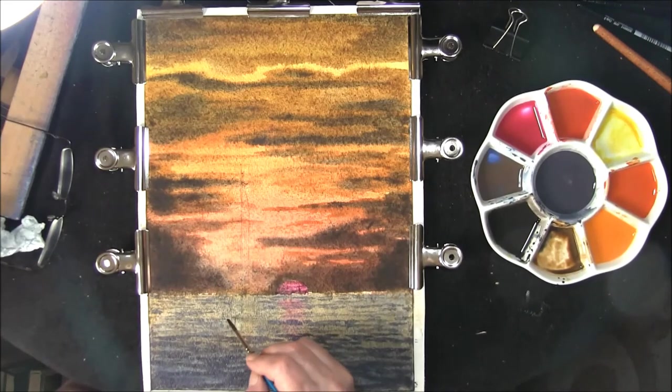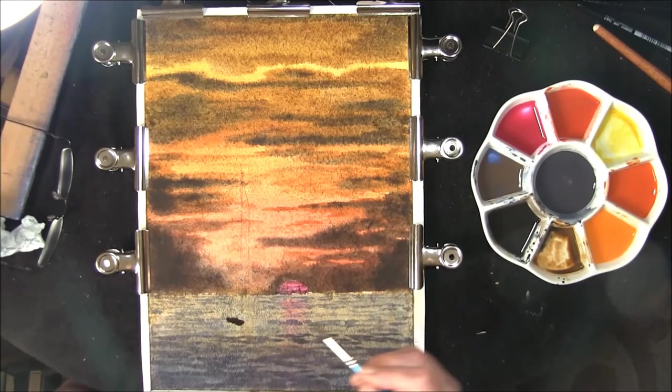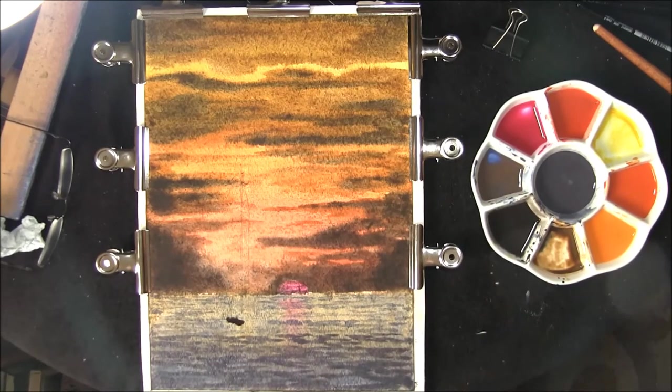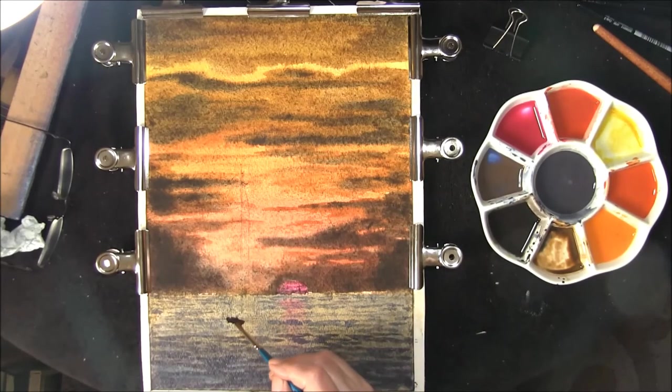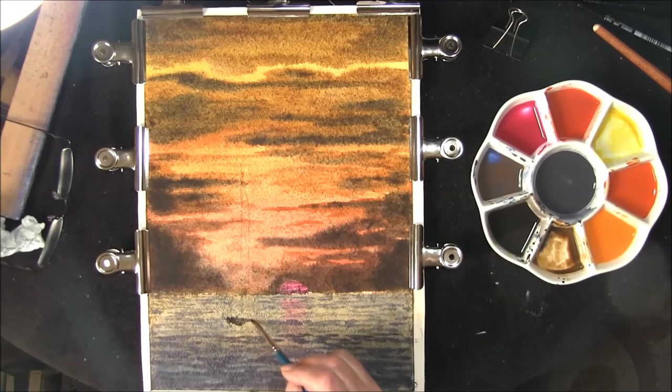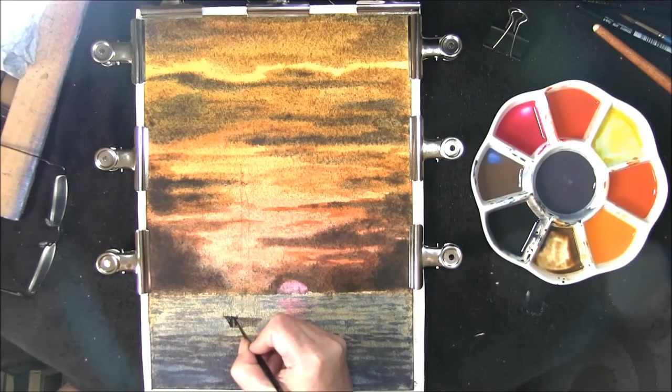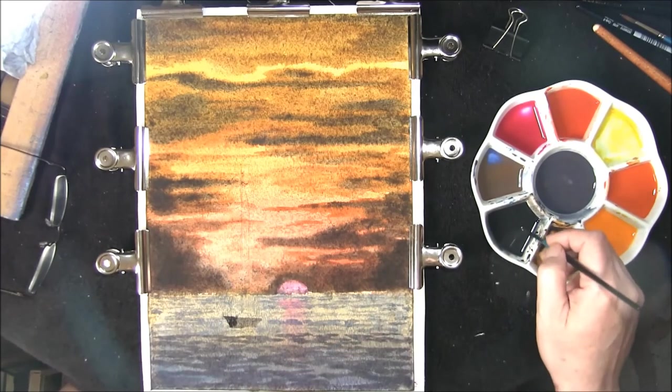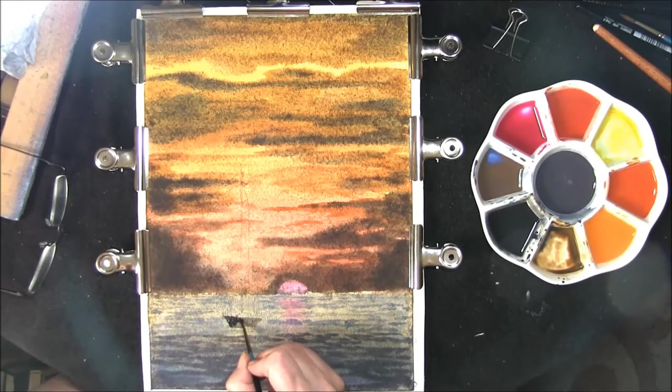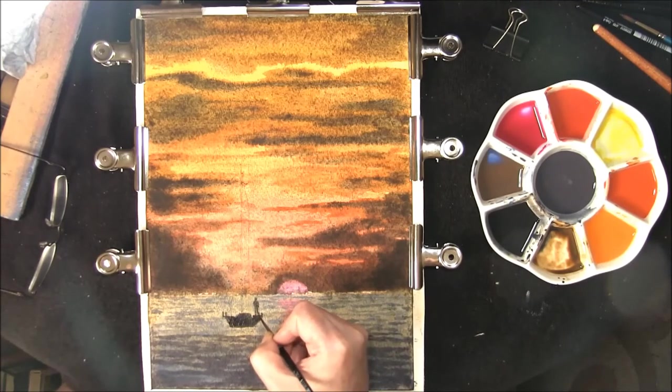We can paint our boat in with a mixture of warm sepia and French Ultramarine. Paint the shape of your boat in, an indication of a couple of silhouetted figures.